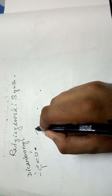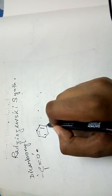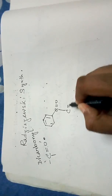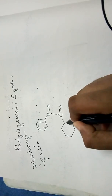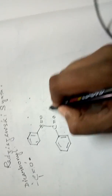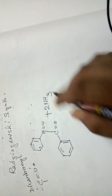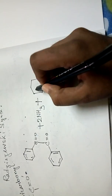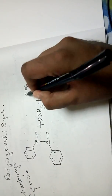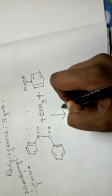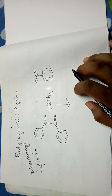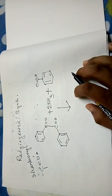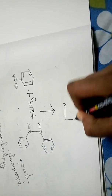For this reaction, we take a dicarbonyl compound containing a phenyl ring. Whenever it reacts in the presence of ammonia (NH₃) plus any aldehyde or ketone — for example, benzaldehyde — this Radziszewski synthesis produces an imidazole derivative, specifically a triphenyl imidazole derivative.